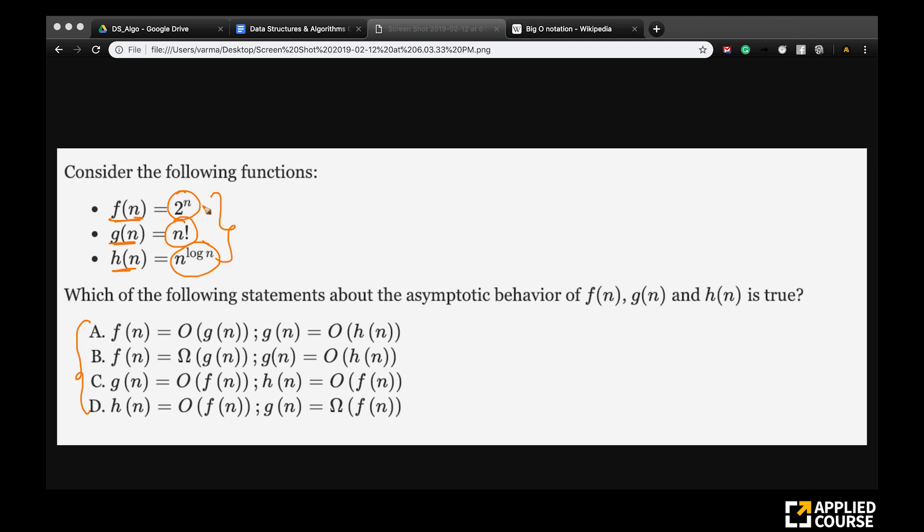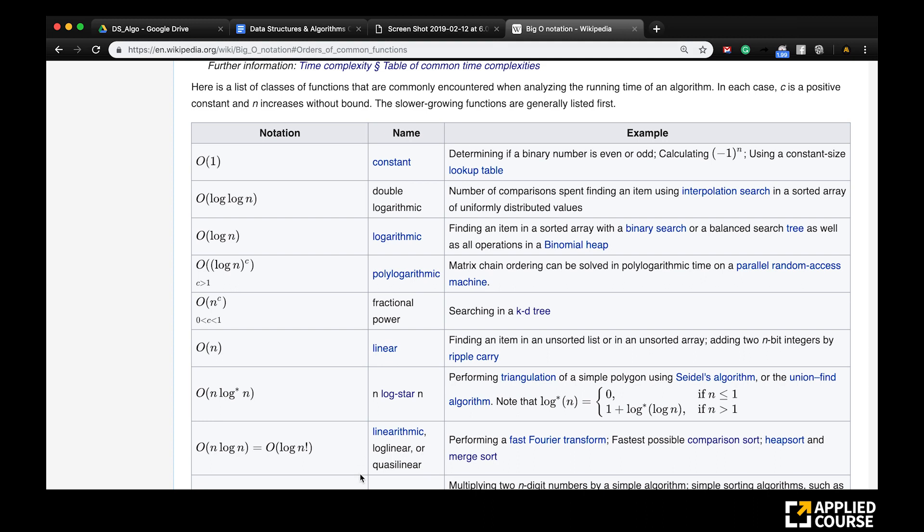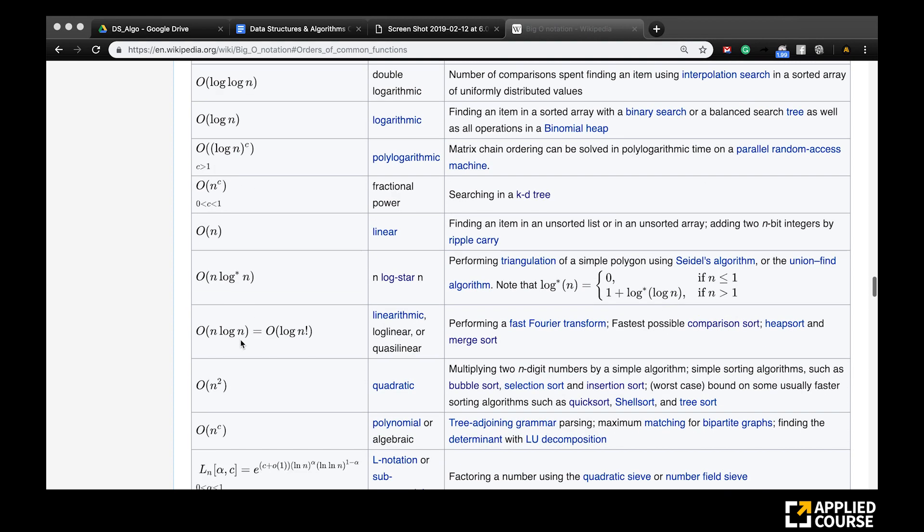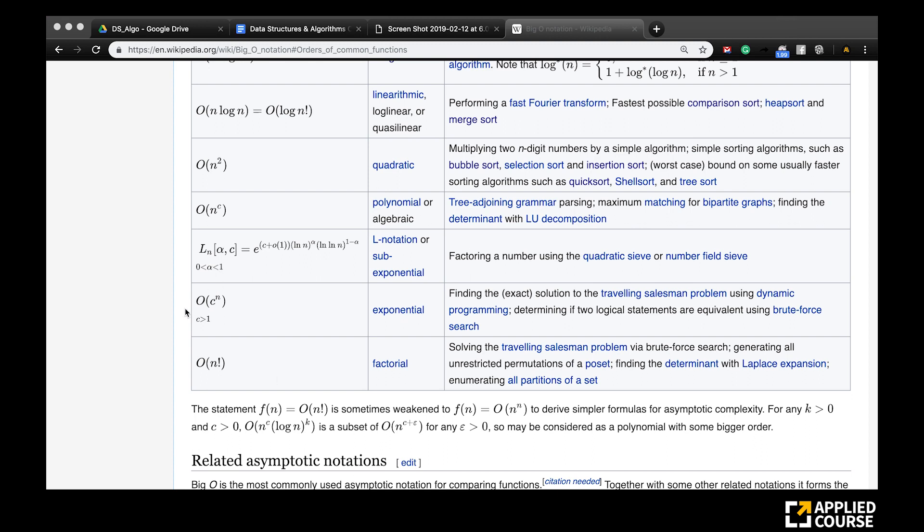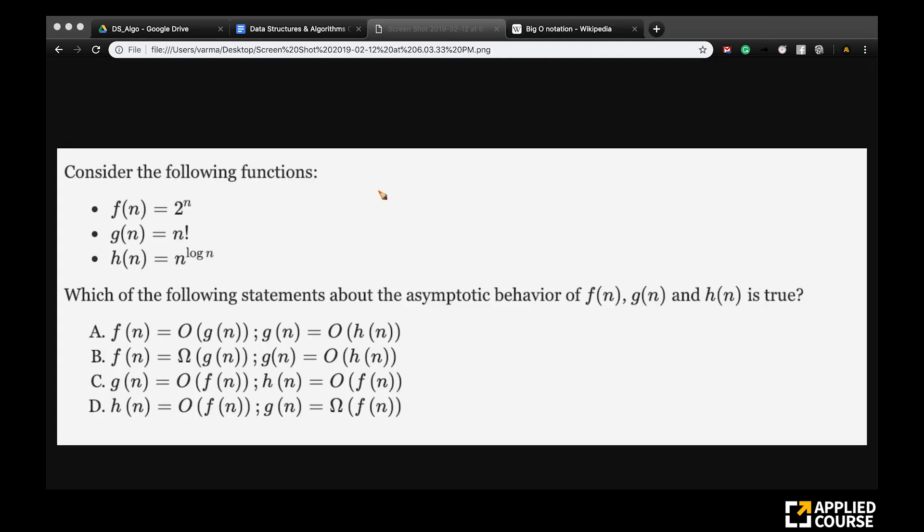This part is straightforward. We know that 2^n grows slower than n factorial. This is almost straightforward. For example, if you just go to the order of functions, that is one of the important things here. Your 2^n, because c is greater than 1, if c equals 2, what you get here is 2^n and here is n factorial.